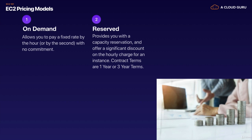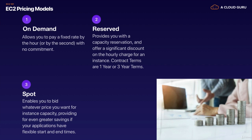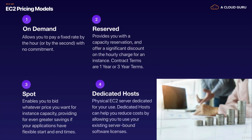We then have reserved pricing, which provides you with a capacity reservation and offers a significant discount on the hourly charge for an instance. The contract terms are one-year or three-years — the more you pay upfront, the more you're going to save. We then have spot instances, where Amazon has excess capacity and drops the prices to get people to use it. However, when capacity runs out, they want it back — so the price moves around like the stock market. You set the price you want to bid at; if it goes above that price, you'll lose your instances within a couple of minutes.